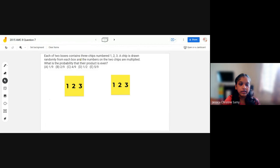Each of two boxes contains three chips numbered 1, 2 and 3. A chip is drawn randomly from each box and the numbers on the two chips are multiplied. What is the probability that their product is even?